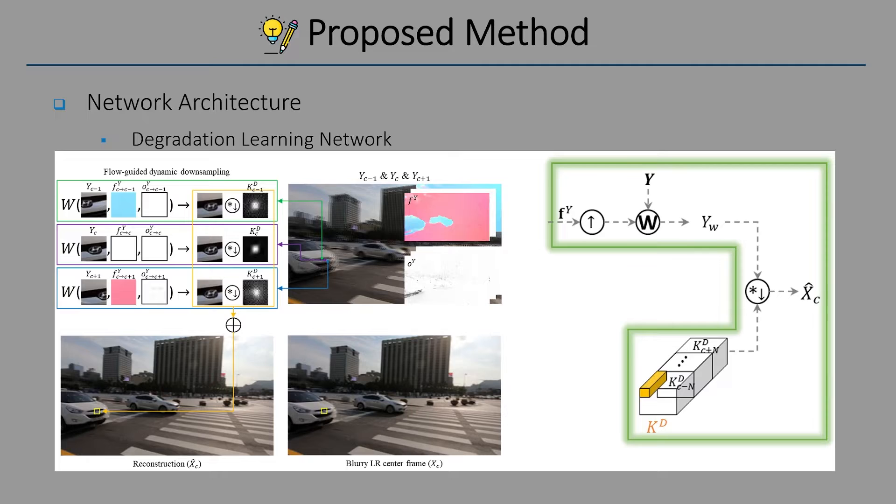This is a visualization example of flow-guided dynamic downsampling. It reconstructs the blurry low-resolution center frame using the predicted flow and kernel.